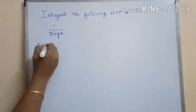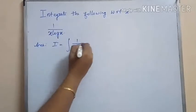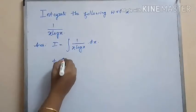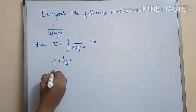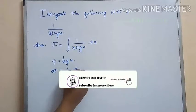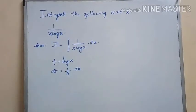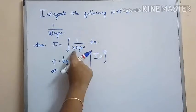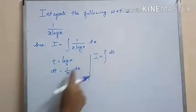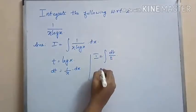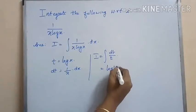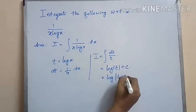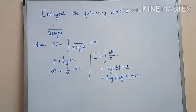The next problem is: integrate 1 by x log x. Let us substitute log x as t. Differentiating, we get dt equal to 1 by x dx. Substituting these values in I, we get the integral of 1 by t dt, which equals log of modulus t plus c. Resubstituting the value of t, the final answer is log of modulus log x plus c.